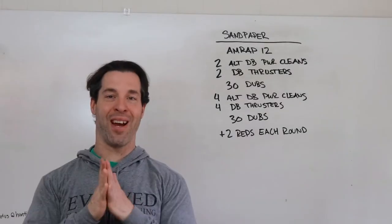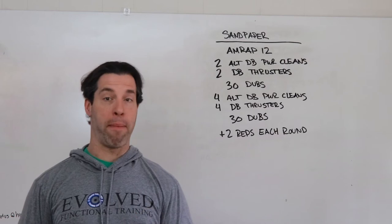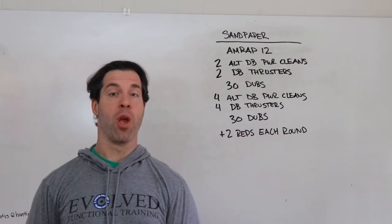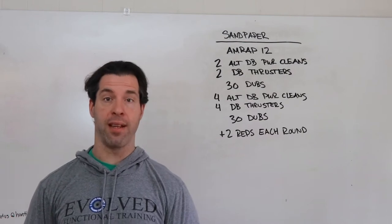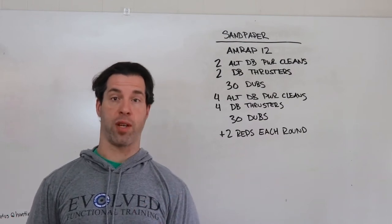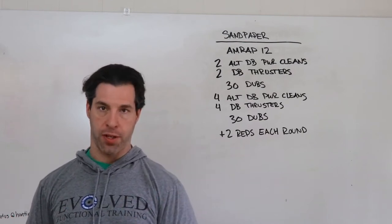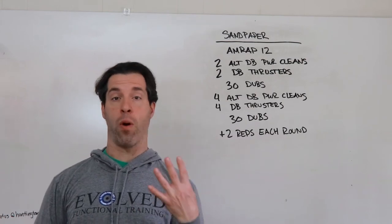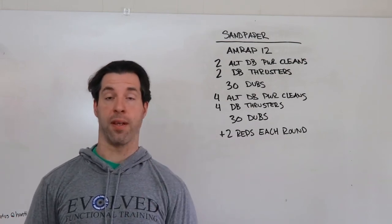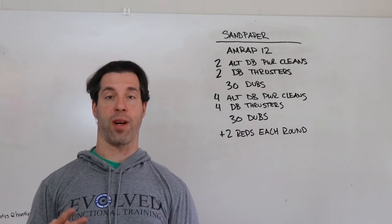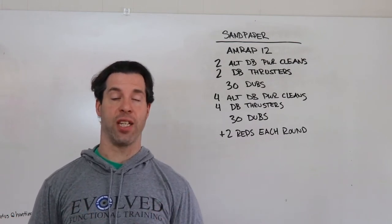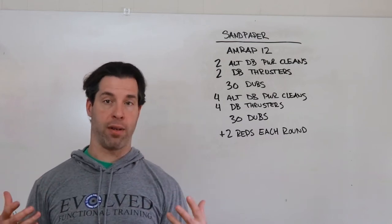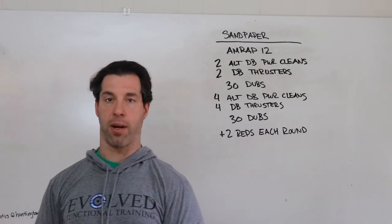Hey guys, welcome to Sandpaper. Sandpaper is a 12-minute AMRAP. We'll start with two alternating dumbbell power cleans, then two dumbbell thrusters, then 30 double-unders. Then we'll do four alternating single dumbbell power cleans and then four thrusters, 30 double-unders. We'll continue in this fashion, adding two reps for every round until we get to that 12-minute mark.